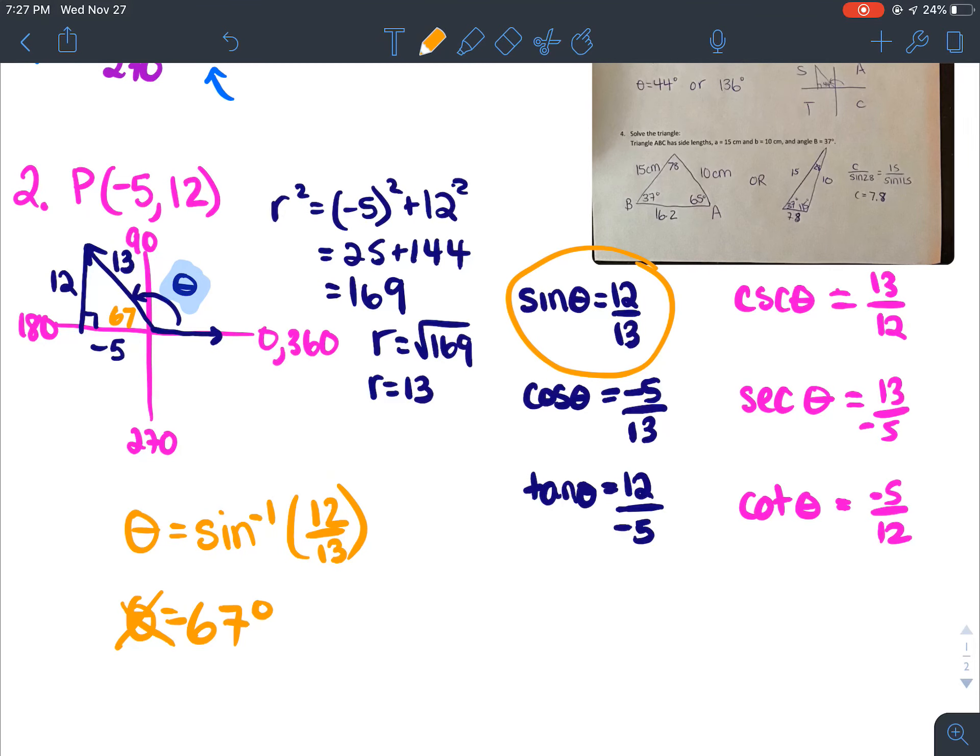and theta is going to have to be 180, so that's actually our related angle, minus 67, which is 113 degrees. So our principal angle is 113 degrees.